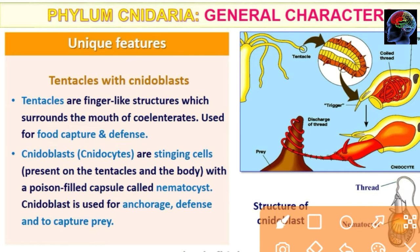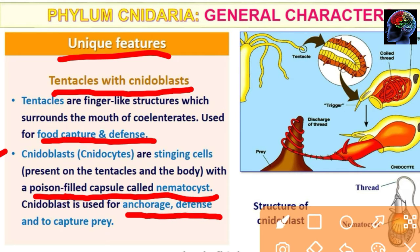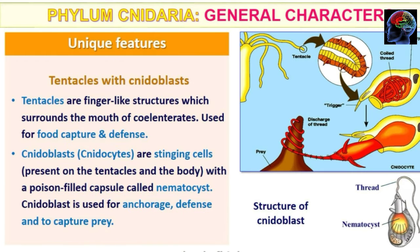The unique feature of Cnidaria is the presence of tentacles and cnidoblasts. Tentacles are finger-like structures surrounding the mouth, used for food capture and defense. Cnidoblasts are stinging cells filled with poison called nematocysts. They are used for anchorage, defense, and capturing prey.